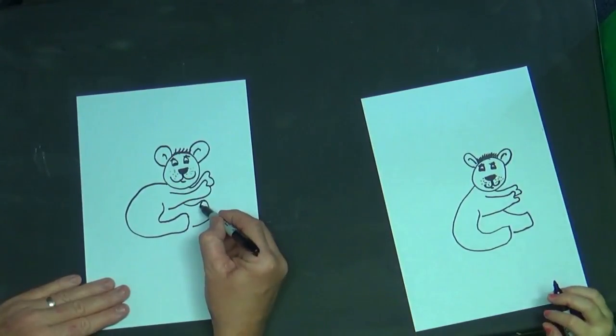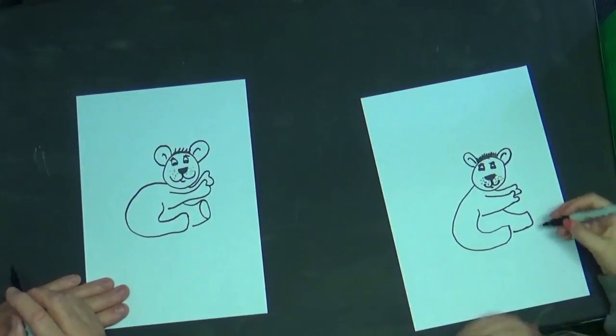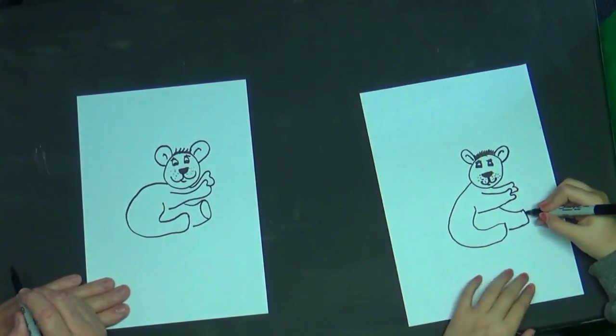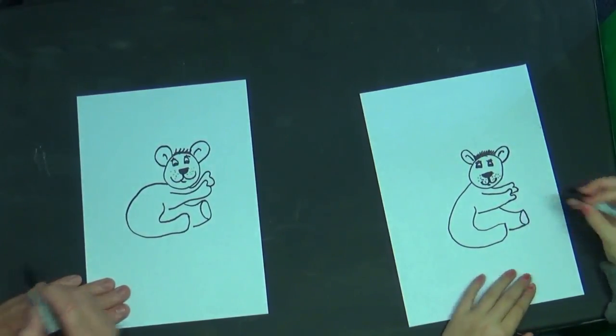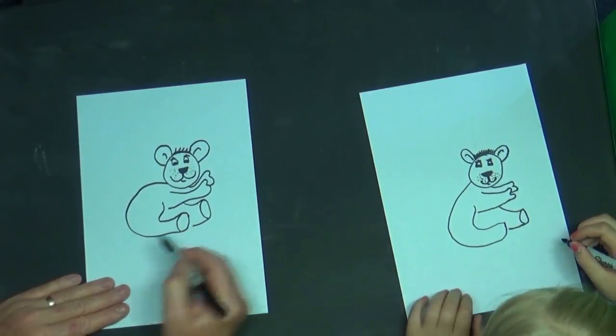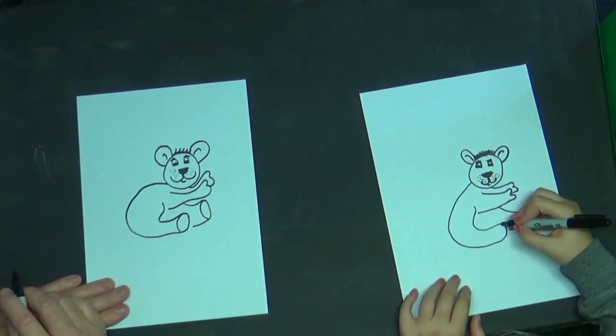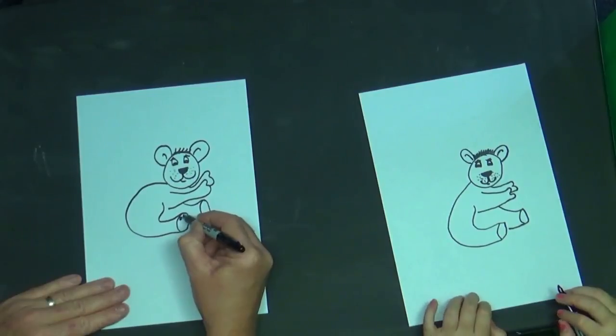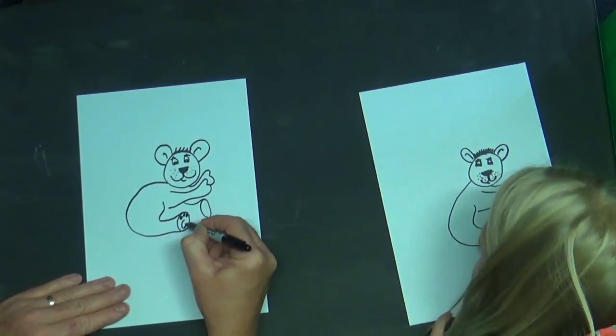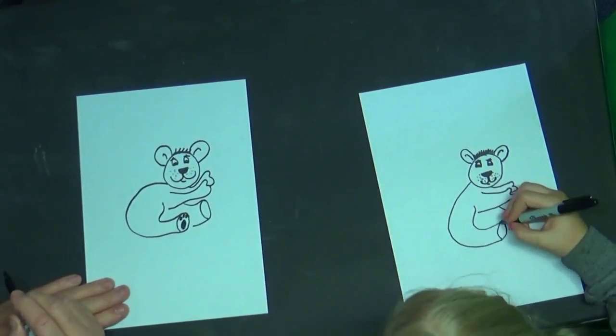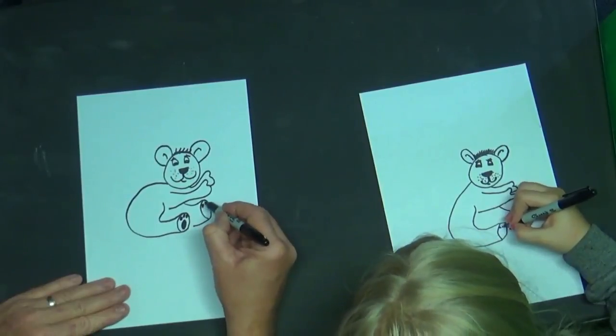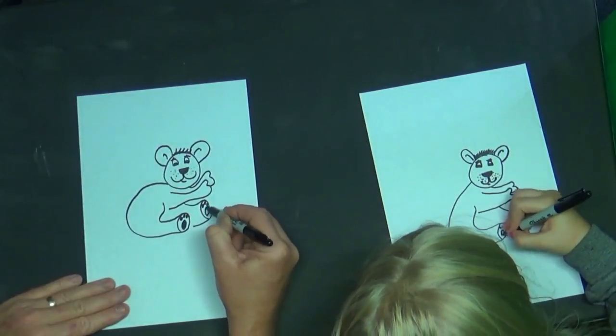Yeah and now draw a little circle like that on that paw. Yeah that's right, like that and then the same there.